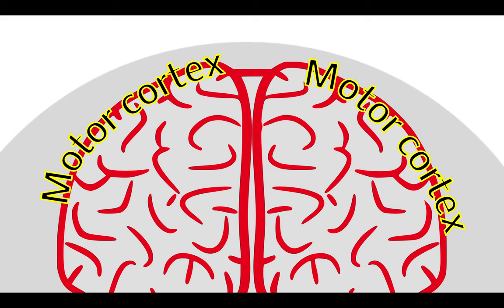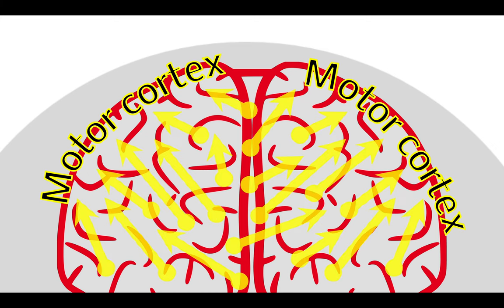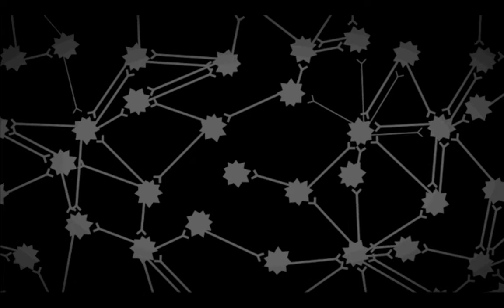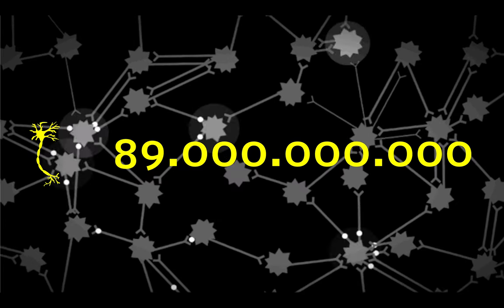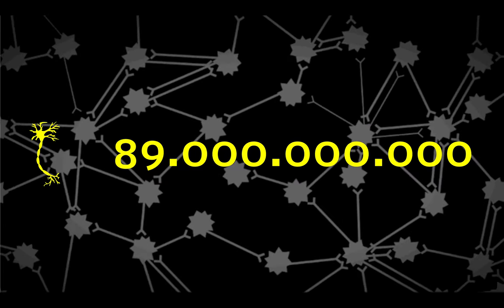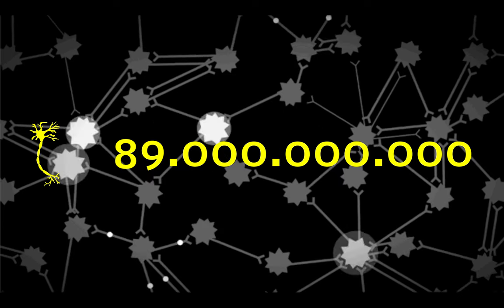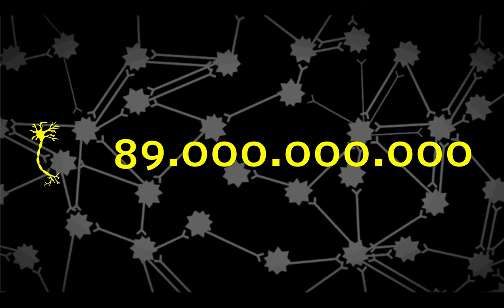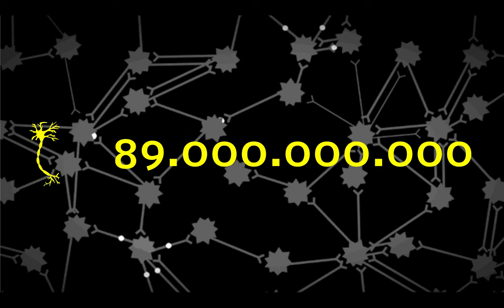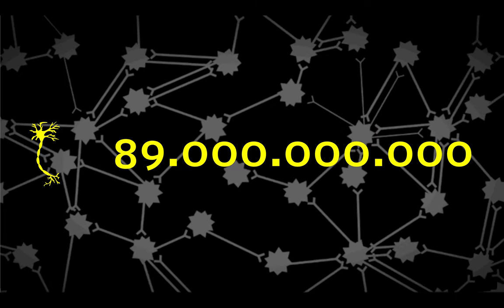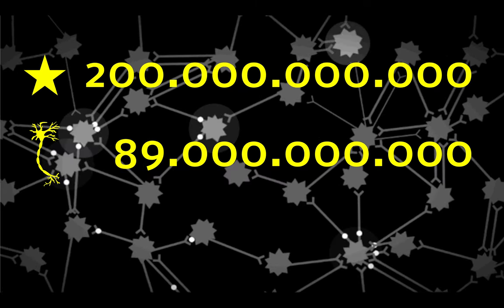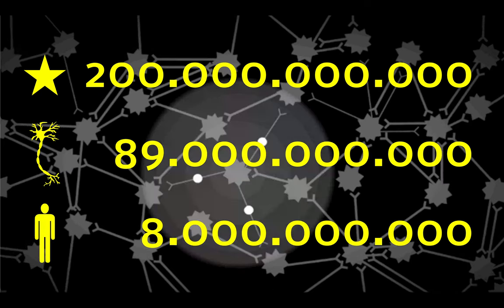The question is: to make sure the motor cortex sends the right signals at the right time, what do we have to change in people's brains? You're probably familiar with models showing neurons — brain cells. You have about 90 billion of those, which is quite a lot. Just for reference, we have about 200 billion stars in our galaxy — so having 90 billion neurons is really a lot.